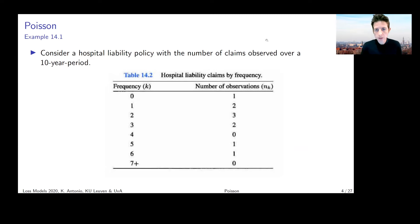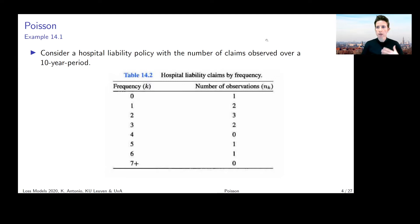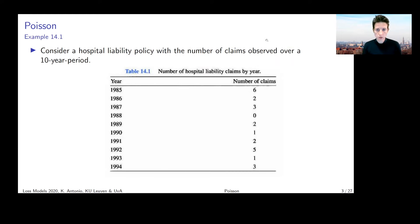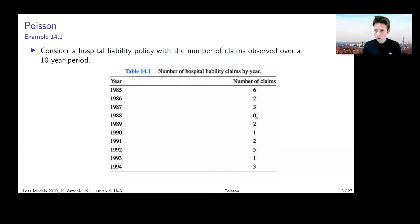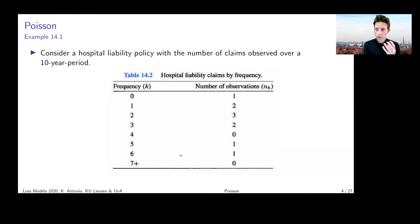For example, there was one year during this 10-year period during which zero claims were reported on this particular policy, and there were two years during which one claim was reported, and so on. Going back to the previous sheet, there is only one year — 1988 — where we have zero claims reported, and there are two years — 1990 and 1993 — during which one claim was reported. This table is another way of summarizing the same information.